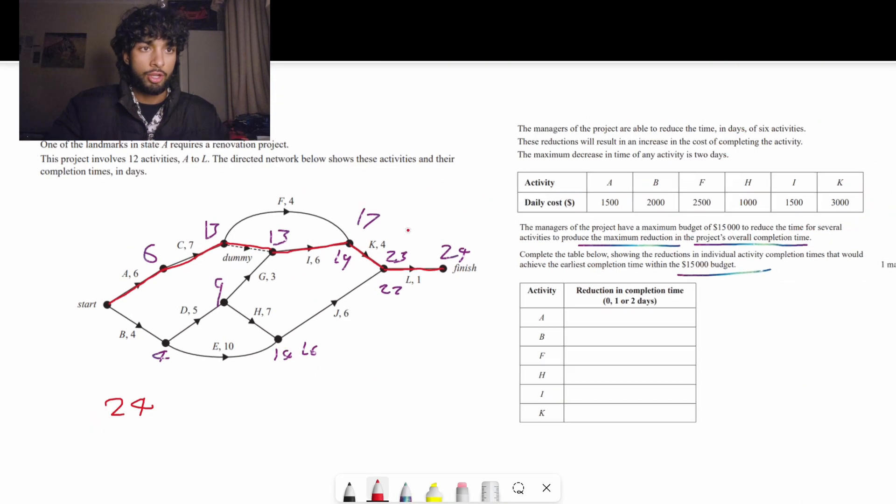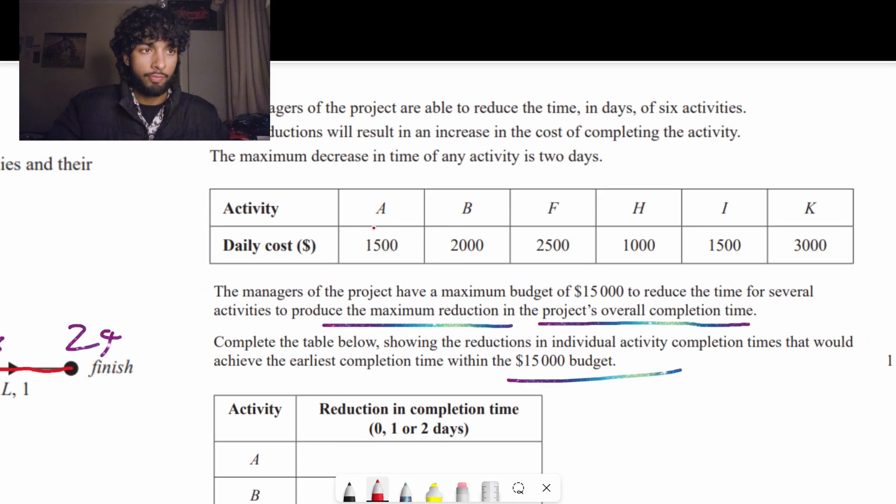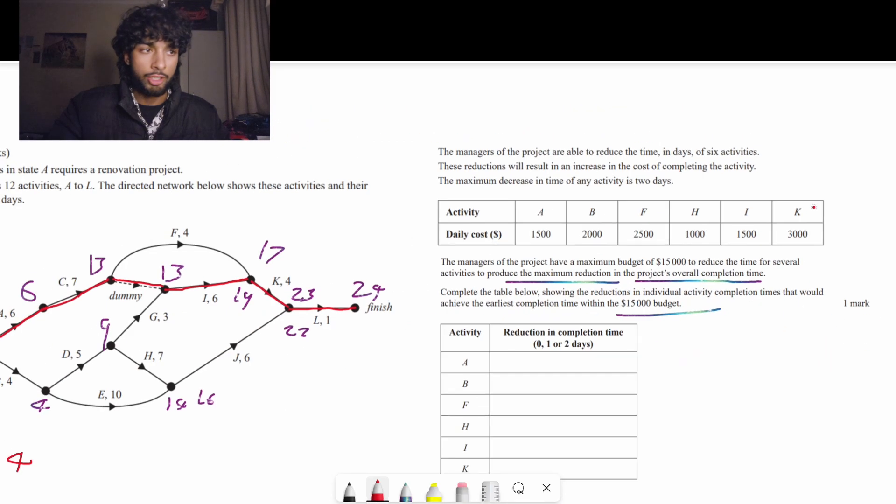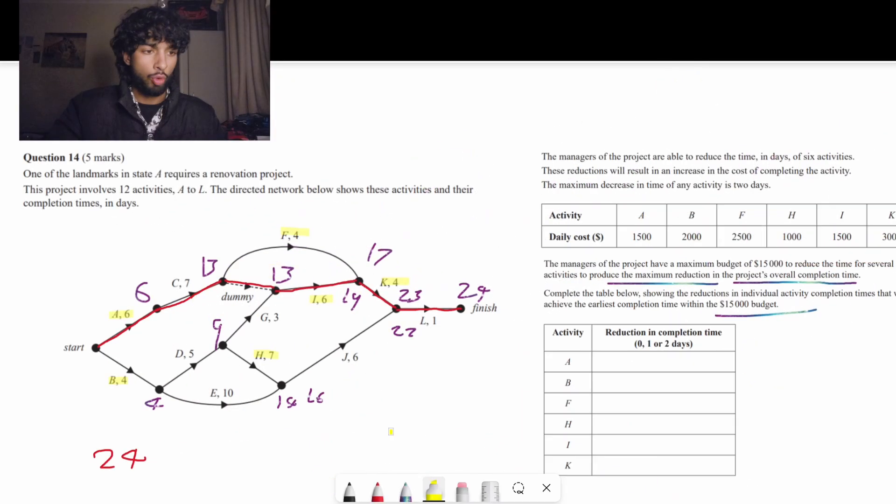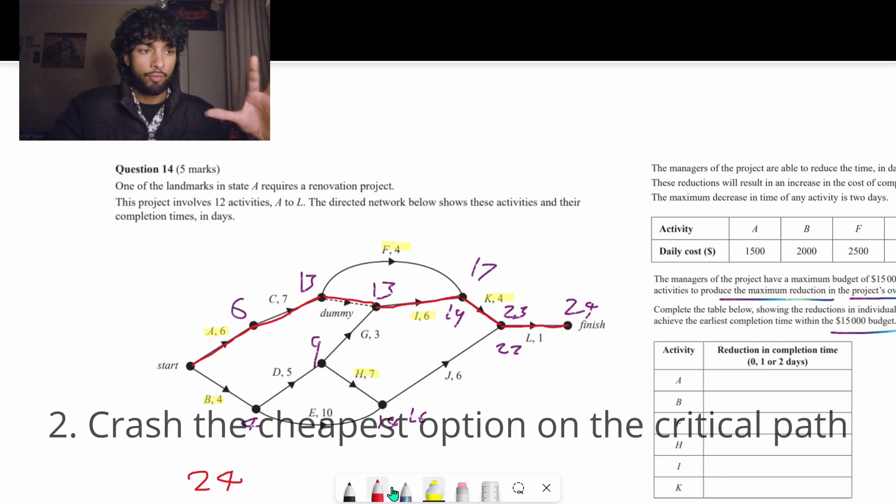Currently the overall completion time is 24 and we want to try to reduce this as much as possible. Let's have a look at the six activities a, b, f, h, i, k. In this method, we're going to first try and reduce only the necessary options and the cheapest options that are on the critical path.